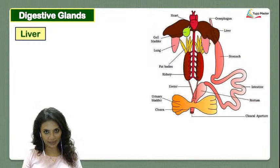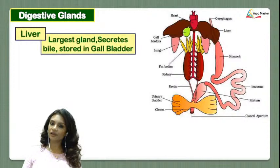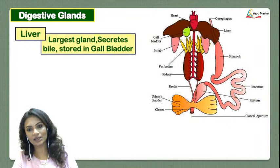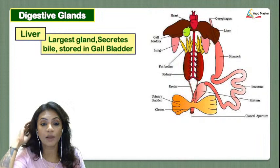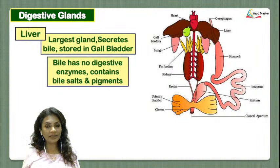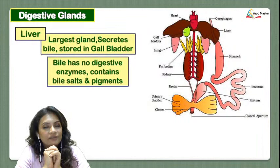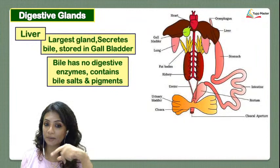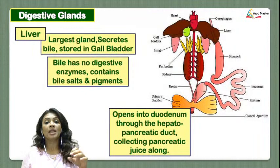Among the digestive glands, the liver is the first and, just like in humans, is the largest gland in the frog. The liver secretes bile, which is stored in the gallbladder. Bile has no digestive enzymes — it contains bile salts and bile pigments, but no digestive enzymes.